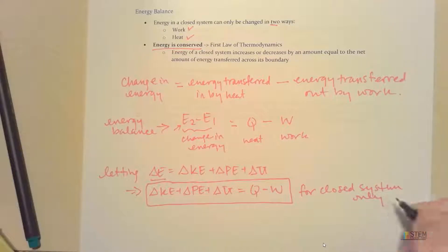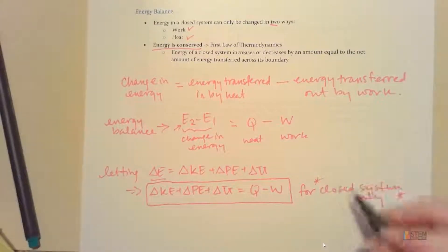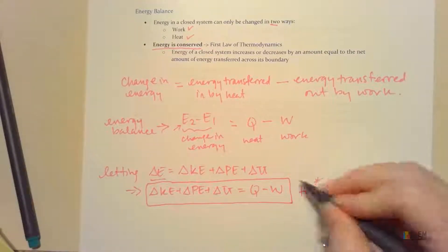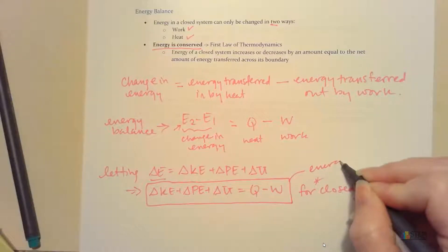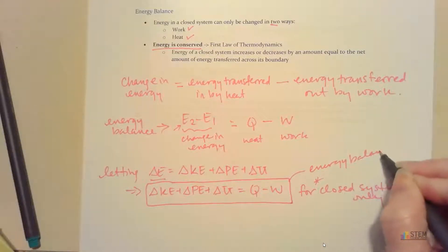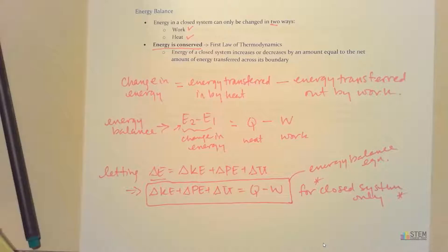And this is for a closed system only. Once we get mass flowing in and out, this equation is going to get a lot longer. But this is our energy balance equation. So when I refer to the energy balance equation, that's the one I'm talking about. And we will refer back to this a lot as long as we're talking about closed systems.